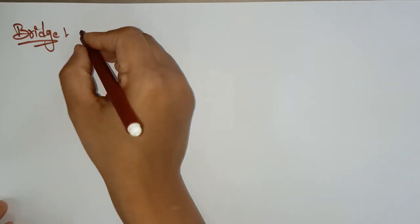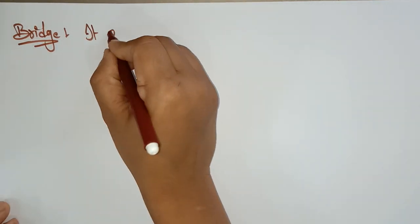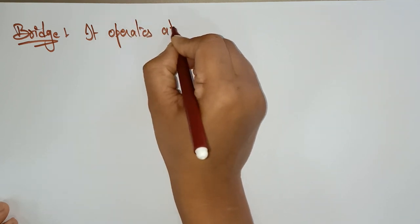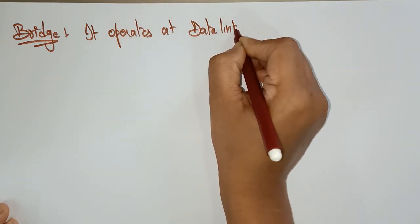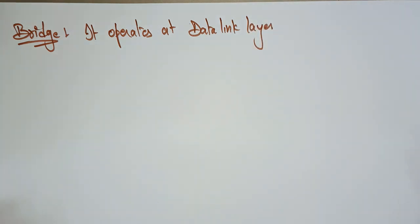Welcome back students. Let's continue with the network devices. In the previous video I explained about two network devices: repeaters and hubs. If you have any doubt on repeaters and hubs, go back and watch that video again. Now let's continue with our network devices. The next one is the bridge. The bridge operates at the data link layer, whereas repeaters and hubs operate at the physical layer, which is the first layer.